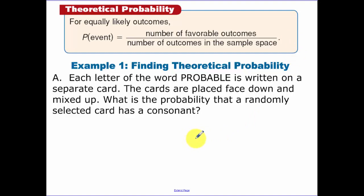Each letter of the word PROBABLE is written on a separate card. The cards are placed face down and mixed up. What is the probability that a randomly selected card has a consonant? So how many total letters do we have in probable? One, two, three, four, five, six, seven, eight. That's my total amount, the number of outcomes in our sample space, but now I need to know the favorable outcomes. Basically, I need to know how many consonants there are. One, two, three, four, five. So our answer is five out of eight.